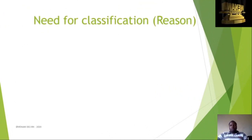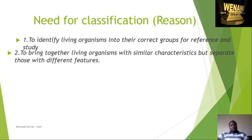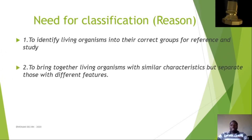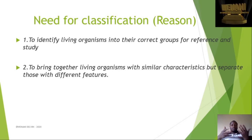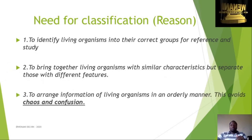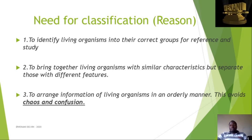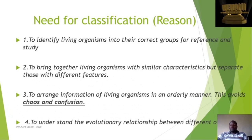Why do we classify living organisms? First, it is to identify living organisms into their correct groups for reference and study. Second, it is to bring together living organisms with similar characteristics and separate those with different features. Third, it helps arrange information about living organisms in an orderly manner so that it avoids chaos and confusion. Without order, everybody would have their own information, bringing a lot of confusion.